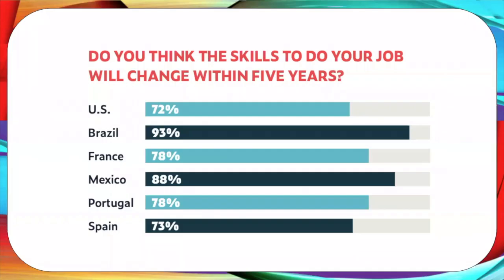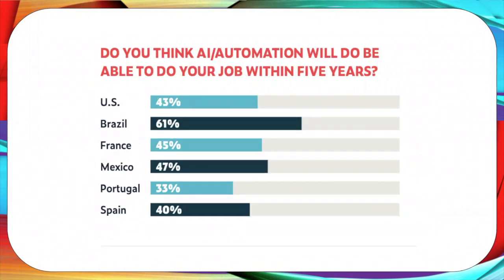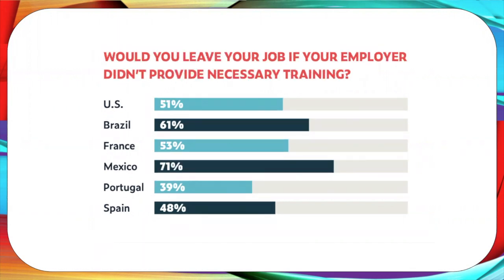In a variety of studies involving thousands of employees across all kinds of industries, when asked whether they think the skills related to their job are going to change, overwhelmingly the vast majority feel that skill changes are coming their way. To the question of whether automation is going to impact their work, a large number of people feel that's true — which means they'll have time and energy available to do other things. And to the question of whether they would leave their job if their employer doesn't provide training, the majority of people who answered said yes, they would.